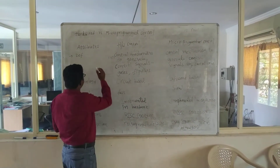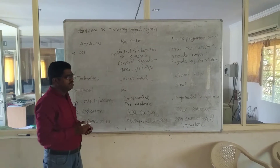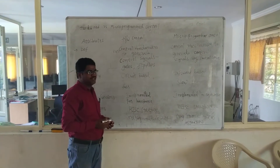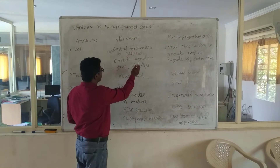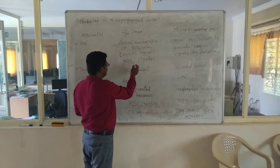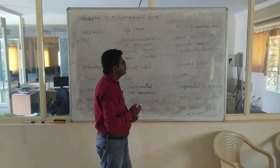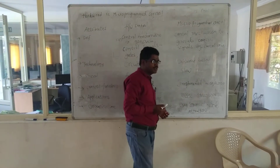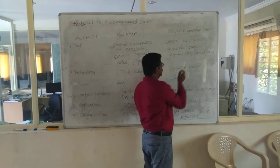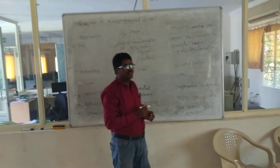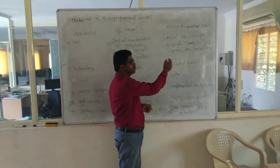First attribute: definition. For the hardware control unit, it is a control mechanism that generates control signals by using gates, flip-flops, and circuits. Whereas for microprogrammed control, it is a control mechanism that generates control signals by a control store, which is a control memory part.